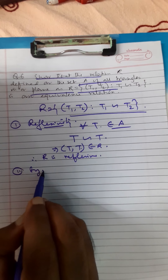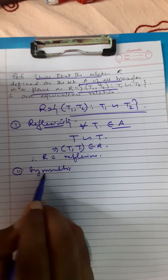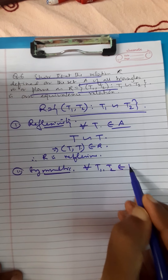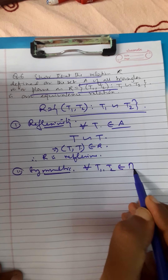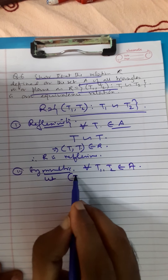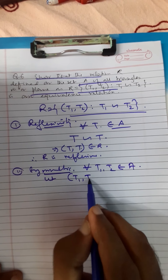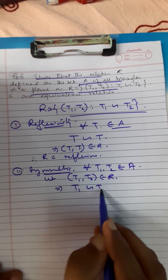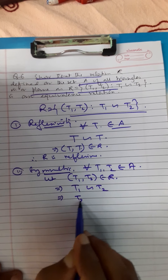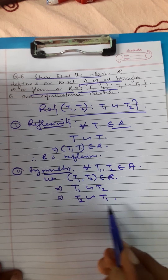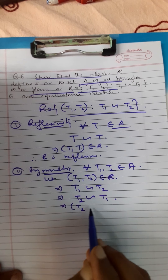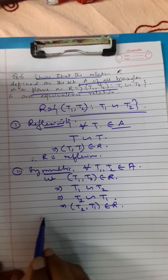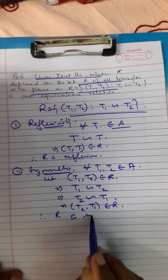For symmetry: for all t1 comma t2 belonging to A, let t1 comma t2 belong to R. It implies t1 is similar to t2. If t1 is similar to t2, then t2 is also similar to t1. That means t2 comma t1 belongs to R. Therefore, R is symmetric.